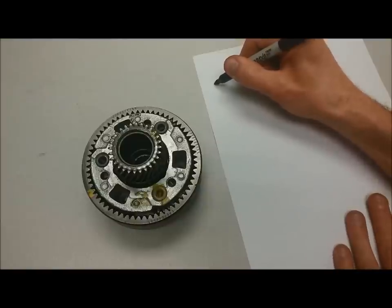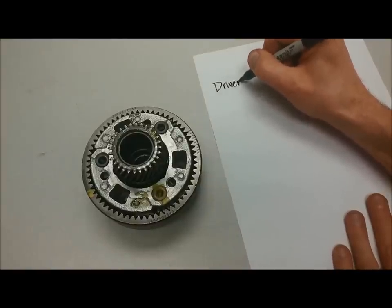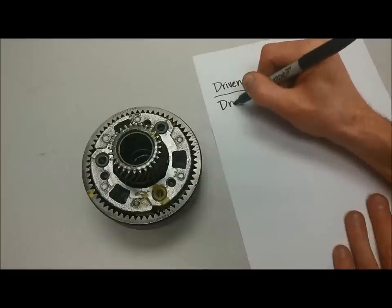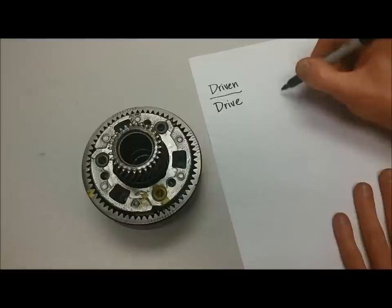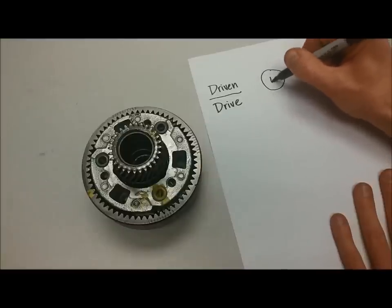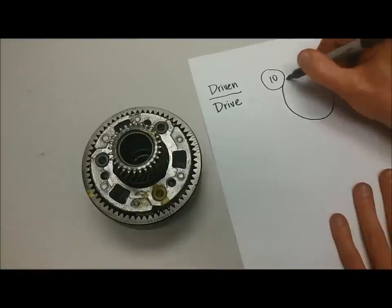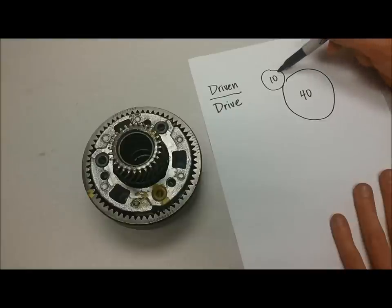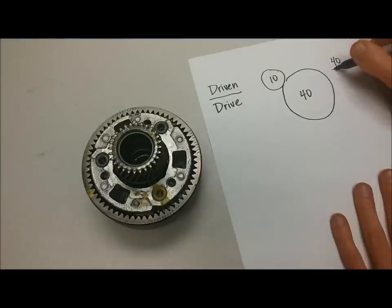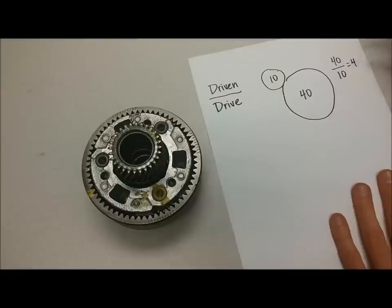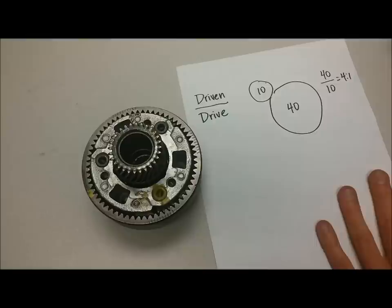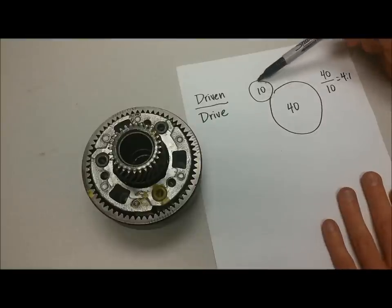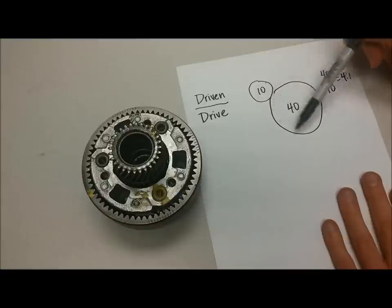The formula that we use for a gear ratio is the number of teeth on the driven gear over the number of teeth on the drive gear. So, for example, if I had a small gear that had 10 teeth on it that was turning a larger gear that had 40 teeth on it, this is the drive gear, this is the gear that's being driven. And so we would say 40 over 10, or 4, for a 4 to 1 gear ratio. What that means is the drive gear has to turn 4 times in order to turn the driven gear once. And that's where the 4 to 1 gear ratio comes from.